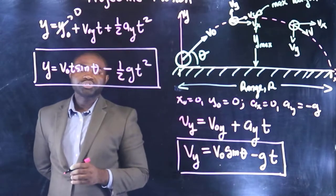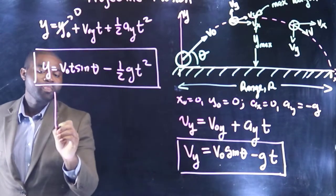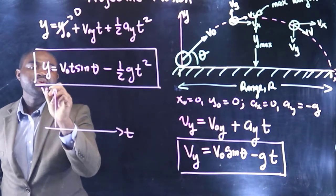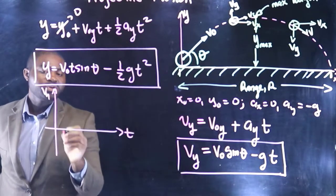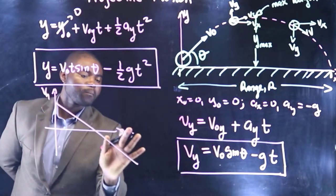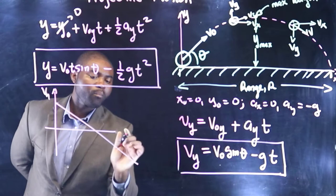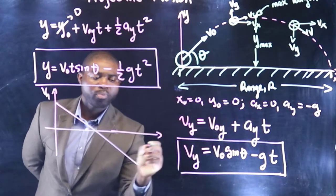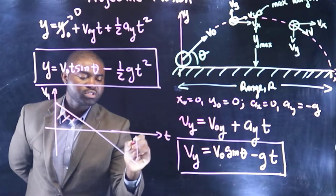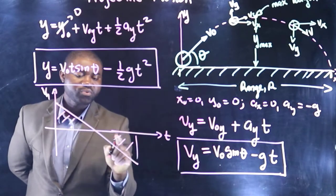So if we draw the graph of vy, the graph will look like this. This is t. For vy, it is worthwhile for you to understand that this area is equal to this area.